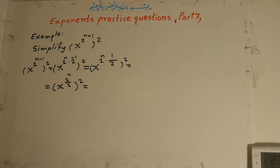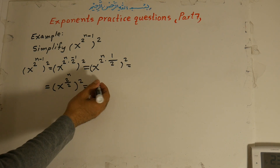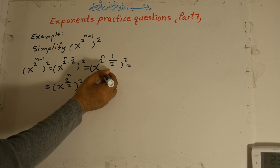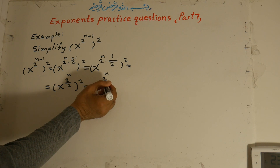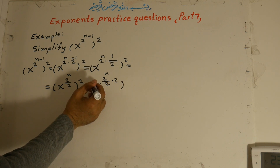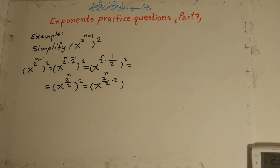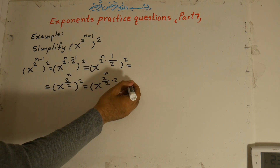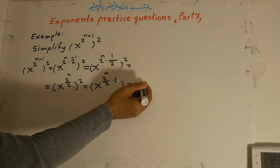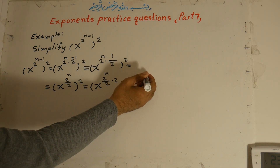Now, when something is raised to a power that is itself in another power, we can multiply the exponents. So we get x to the power of 2 to the power of n over 2, times 2. The 2 cancels with the 2, and that is equal to x to the power of 2, all to the power of n.